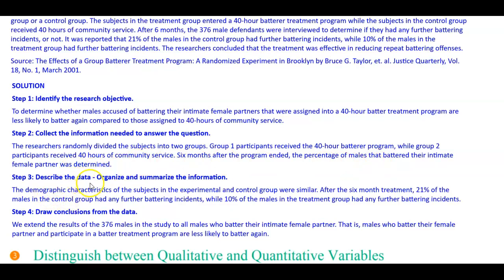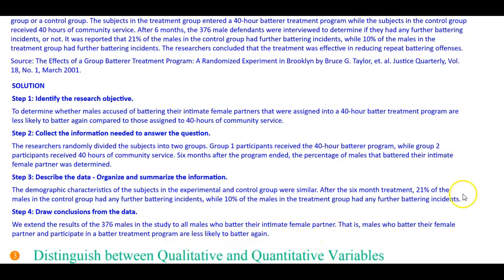Step three — describe the data: organize and summarize the information. The demographic characteristics of subjects in the experimental and control groups were similar. After six months, 21% of males in the control group had further battering incidents, while 10% in the treatment group did. Step four — draw conclusions: we extend the results of the 376 males in the study to all males who battered their intimate female partner — that is, males who participate in a batterer treatment program are less likely to batter again.